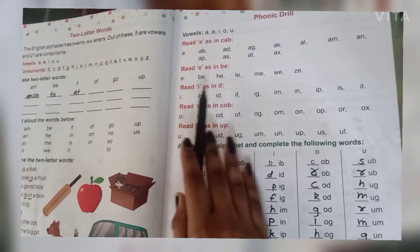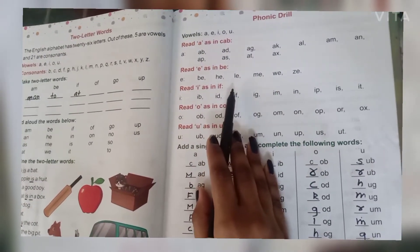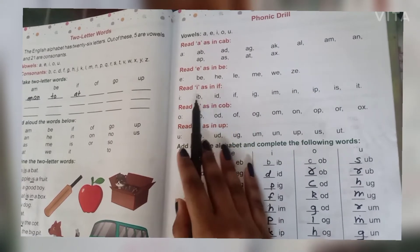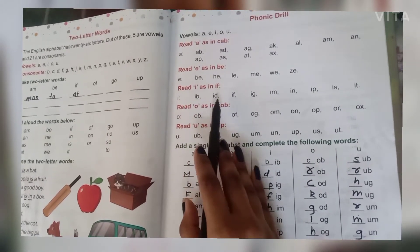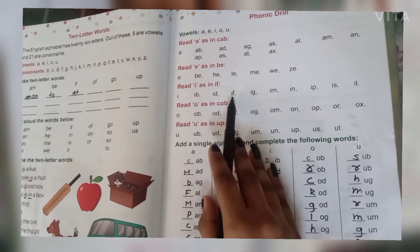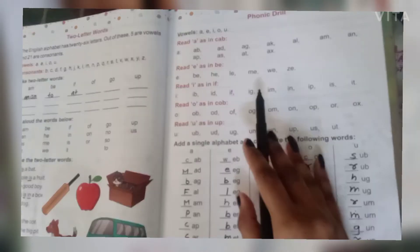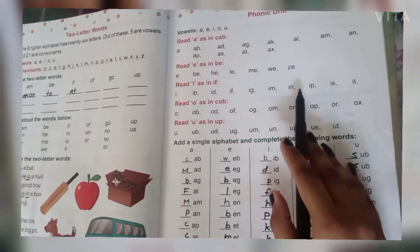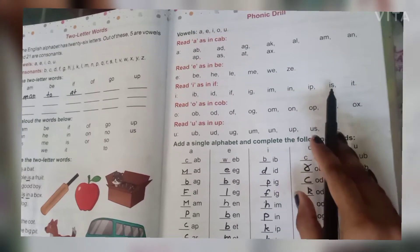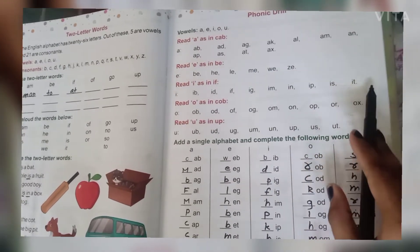Read I as in if. So if. I-B, ib. I-D, id. I-F, if. I-G, ig. I-N, in. I-M, im. I-P, ip. I-S, is. I-T, it.